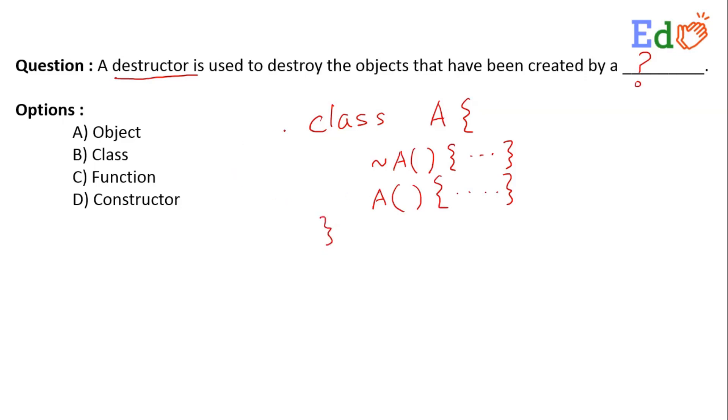So now we know that whenever an object is getting executed, then constructors are getting executed. So when the object will get created, then one constructor will get executed, and whenever the object is getting deleted from the memory, then the destructor is going to get executed.